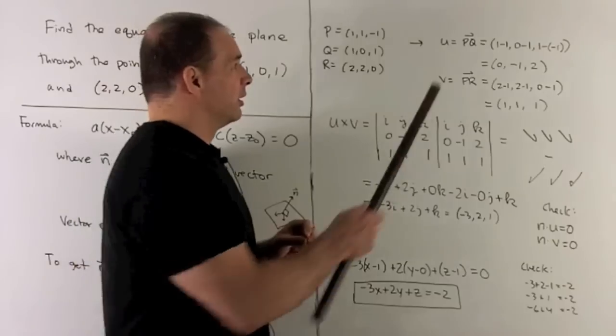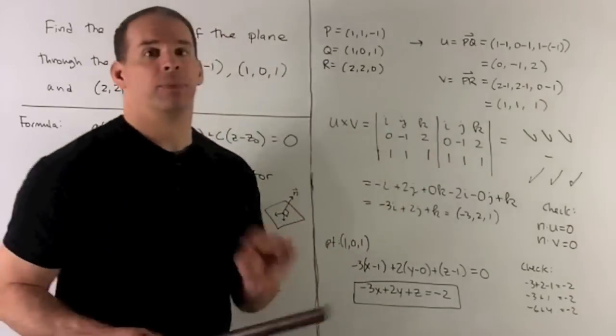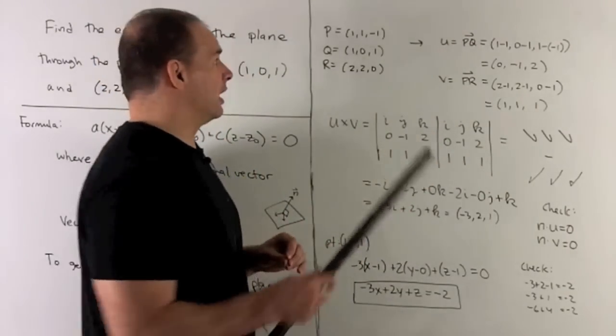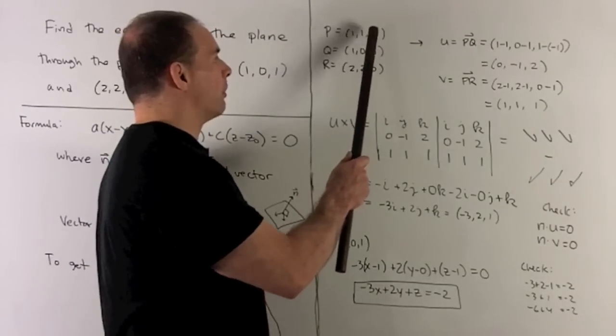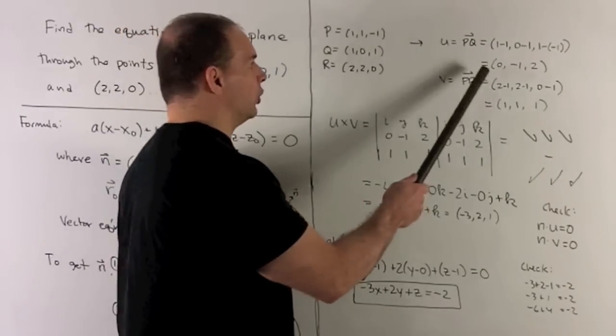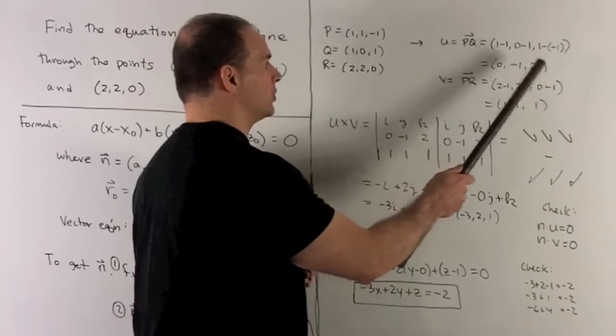I'm going to take the difference of Q minus P coordinate-wise. So it's going to give me 1 - 1, 0 - 1, 1 - (-1). Gives me the vector U = (0, -1, 2).